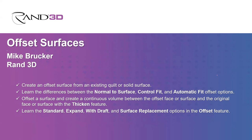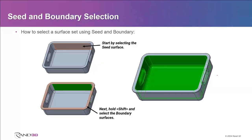But before we get into the offset, I want to show you a selection technique. If you've seen this and used it, this will be a review. But if you haven't, it's a very handy little tool. Anytime you need to pick a bunch of adjacent surfaces — maybe you're picking them to copy, thicken, offset, exclude from a shell, or just change the color — if you're looking to pick a bunch of adjacent connected surfaces, one way is to hold the control key and pick every one of them.